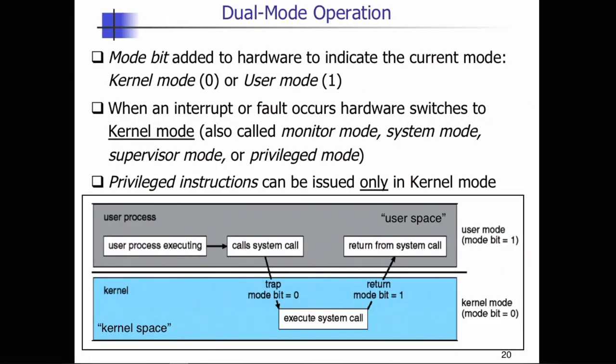First we are going to talk about dual mode operation. We want to make sure we are able to distinguish between execution of operating system code versus user-defined code at all times. At the very least, we need two separate modes of operation, and the hardware can support a mode bit. The mode bit can either be zero or one.